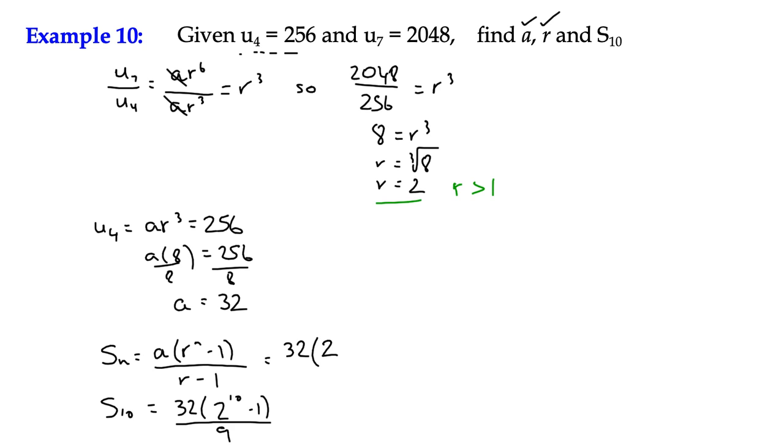It's a case of just working out all of that. It's going to be quite big. So 32 multiplied by—I'll just put it in my calculator—32 times 1024 minus 1, all over 9, and the answer works out as 32,736.